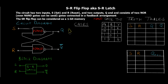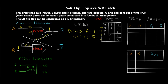For NAND Case 1: S = 0 and R = 1. From the NAND gate truth table, if any input is 0 the output is always 1. Since S = 0, the upper NAND gate output Q = 1 regardless of the other input. This Q = 1 is fed back to the lower NAND gate; with R = 1 and feedback = 1, both inputs are 1 — giving Q-bar = 0. Since R = 1, this is the Reset state.